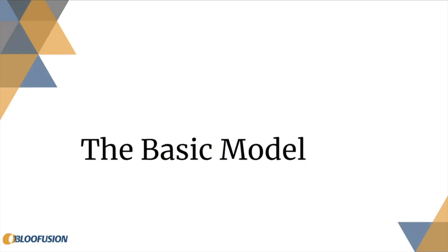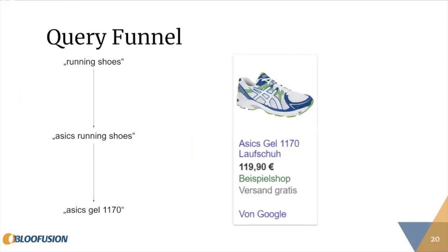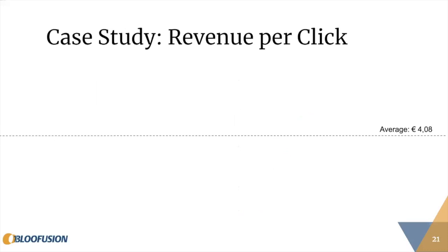Now let's look at the basic model — the one I introduced in 2014 that is still the go-to model today. It's built on the idea that different people use different kinds of queries: generic queries, brand queries like 'Essex Running Shoes', and product-specific queries where someone is looking for one specific product. In Google Shopping they all get to see the same ad, but we shouldn't use the same bids — that is the idea.